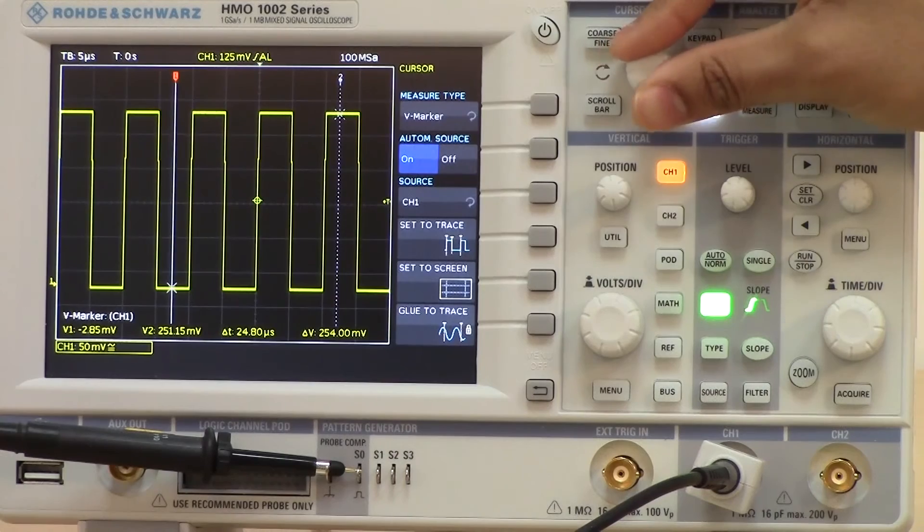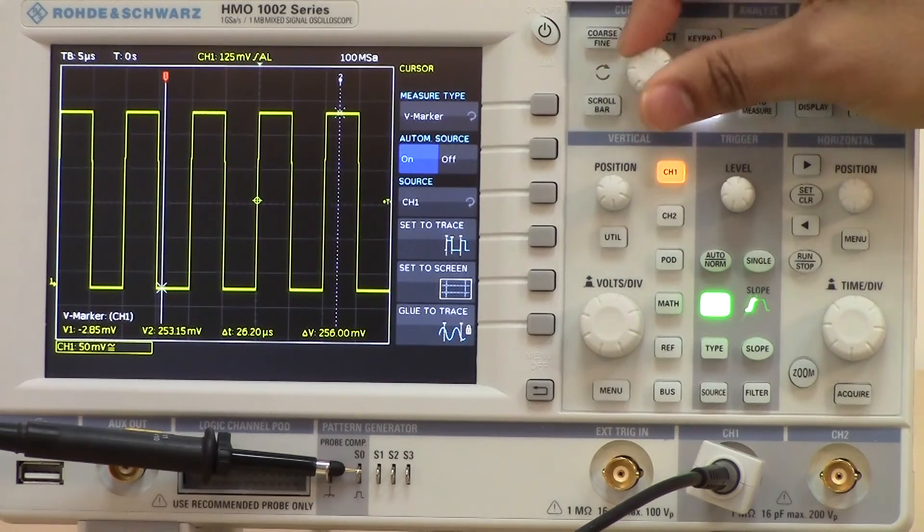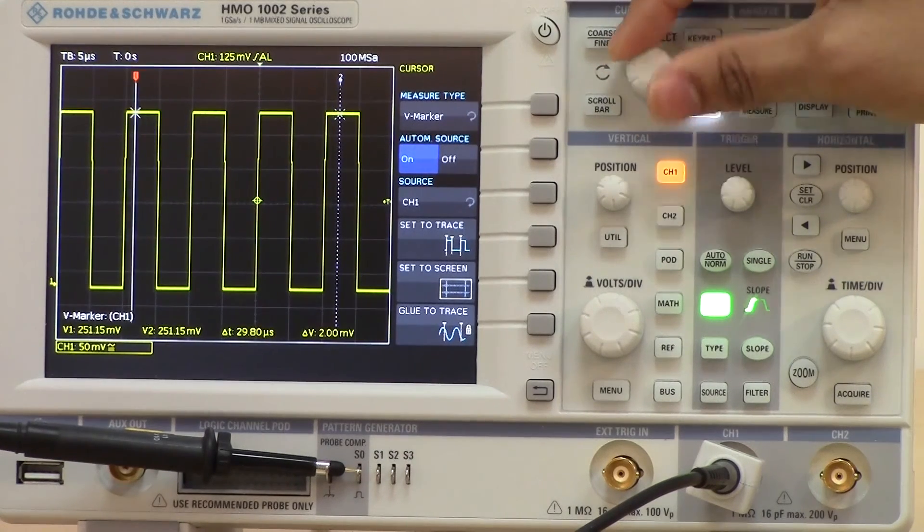So users can then choose to move the time and follow what that voltage is actually doing across the trace.